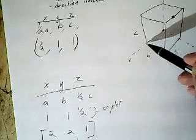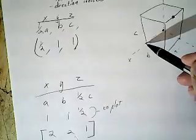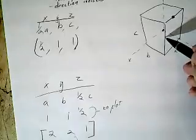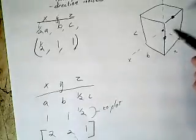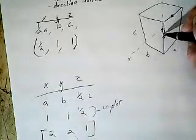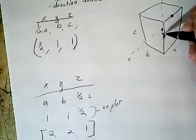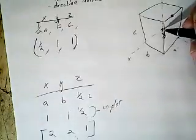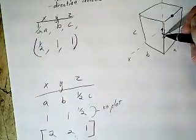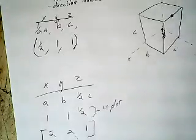So if we're starting from the origin up here, we're going to use these points to plot. And for x, we're going to go along one. And then for y, we're going to go along one. And then for z, we're going to go up one half. And then you can draw basically a vector. It's not a vector, but it looks like a vector. So just an arrow from the origin to that point. And that is how you draw direction indices.